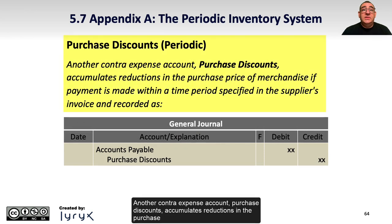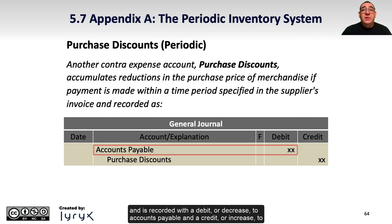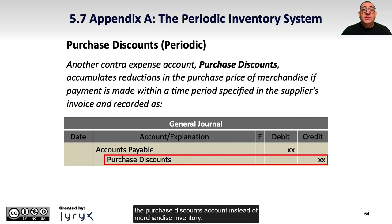Another contra expense account, purchase discounts, accumulates reductions in the purchase price of merchandise if payment is made within a specified time period in the supplier's invoice. It is recorded with a debit or decrease to accounts payable and a credit or increase to the purchase discounts account instead of merchandise inventory.